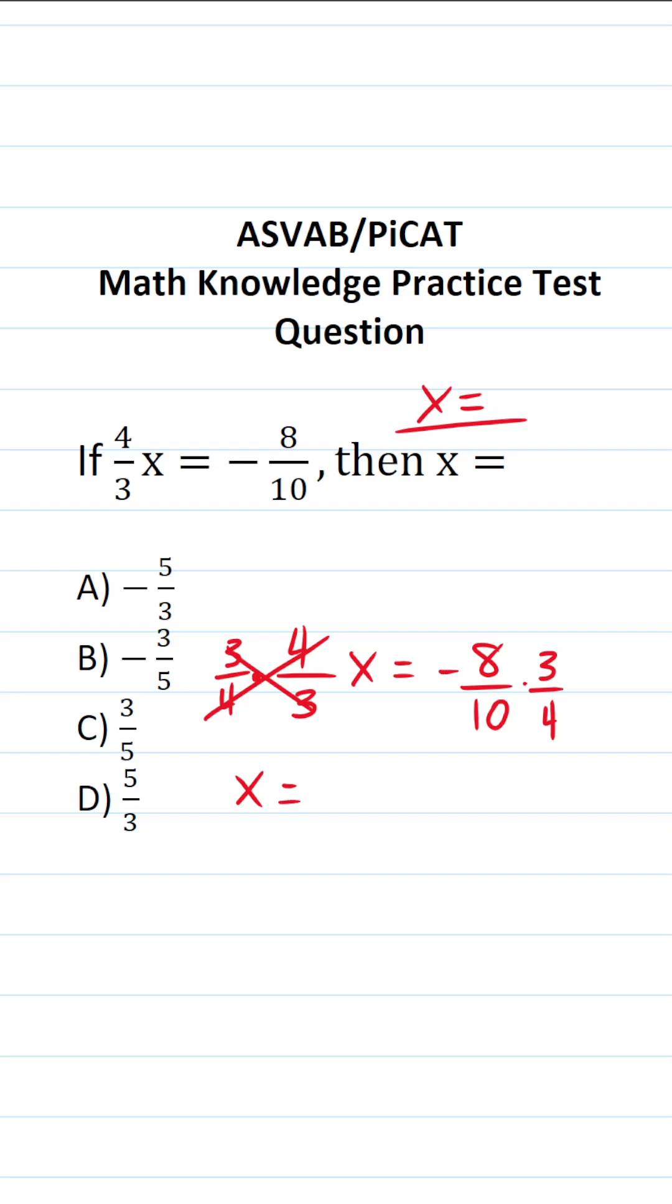Let's take a look at what we have here. We have negative eight over ten times three fourths. Before we do this math, we want to try to cross reduce whenever possible. Four goes into four one time. Four goes into eight two times. So this becomes negative two over ten times three over one.